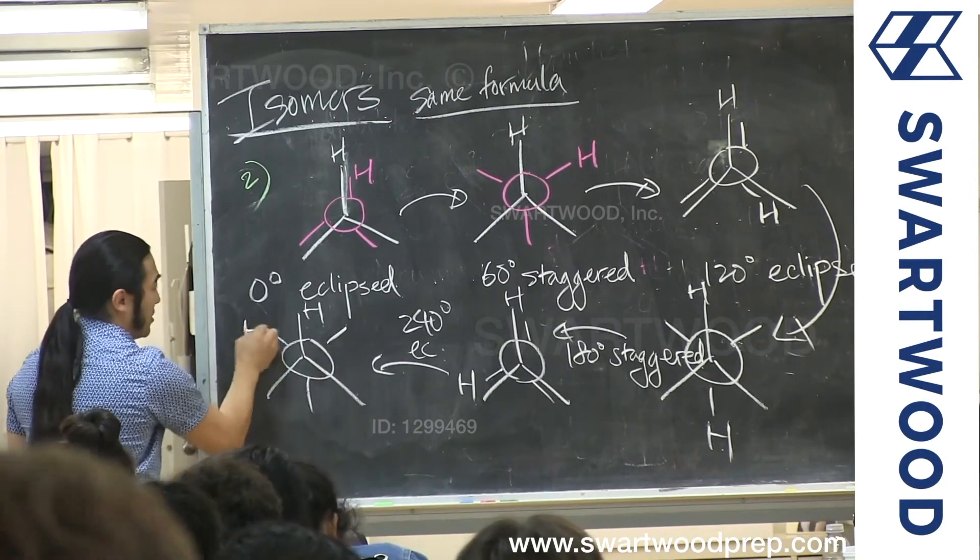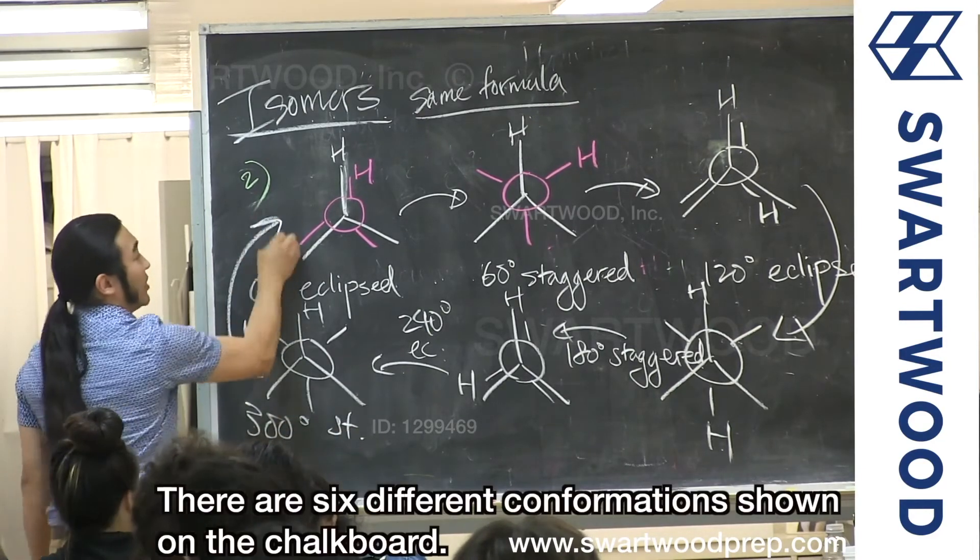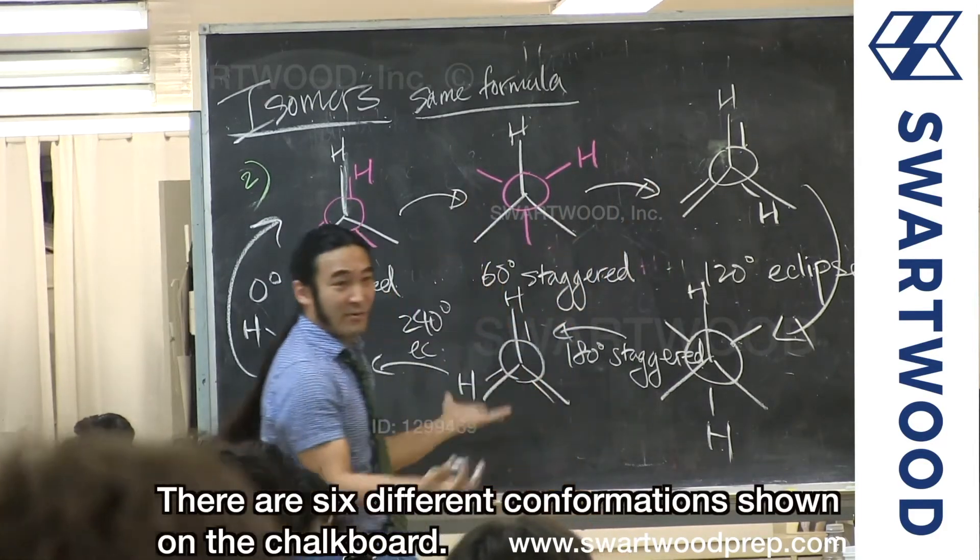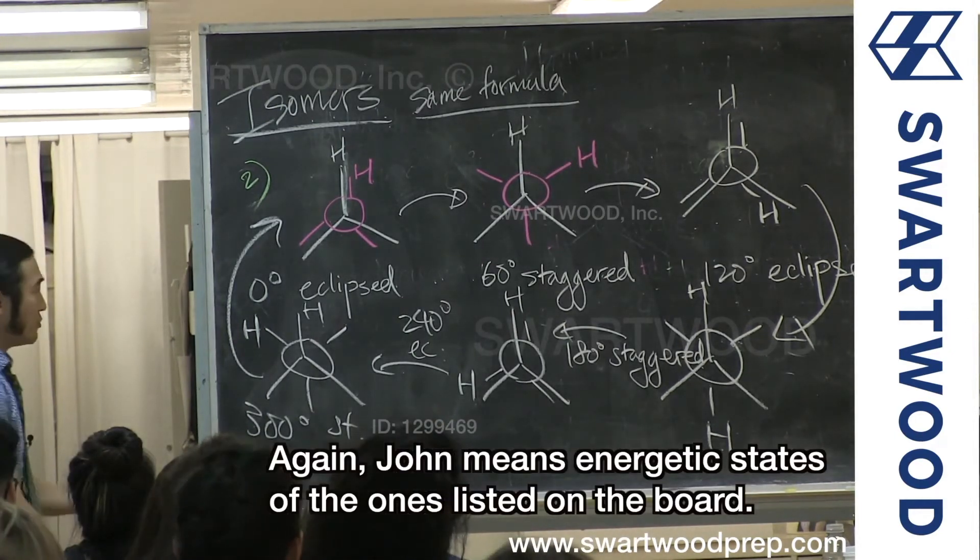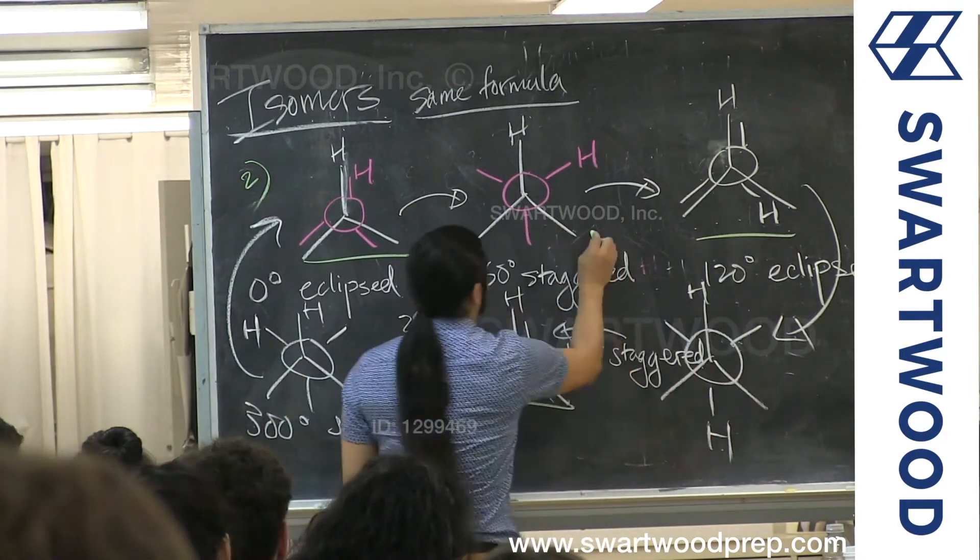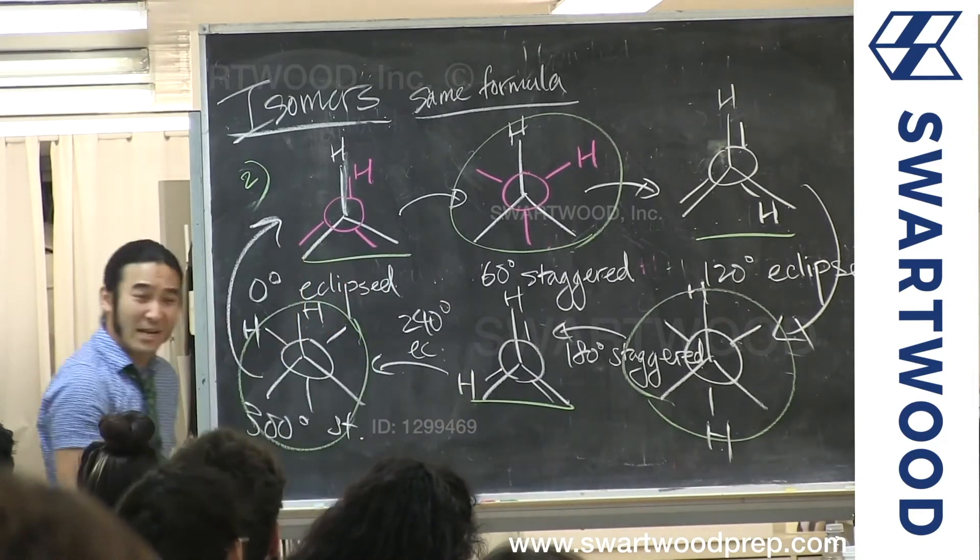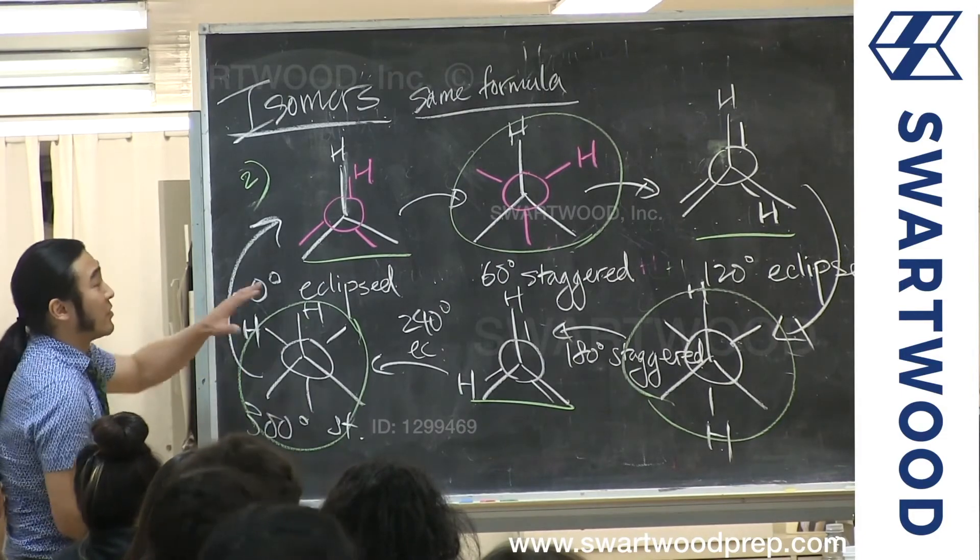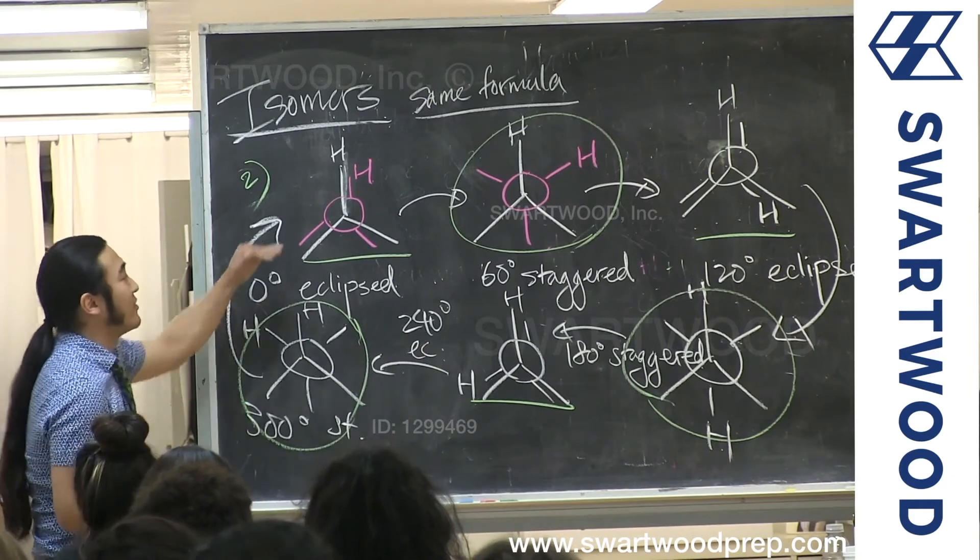In terms of energy, how many different energetic states do you have? Two, because all the eclipsed guys look the same and all the staggered guys look the same. So do you agree that energetically they're really only two different things right now? You can say there are three low energy conformational isomers, or you can say energetically you either have eclipsed or staggered.